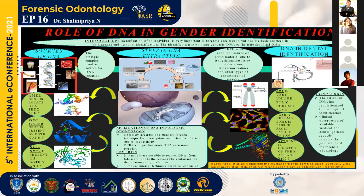Next is HLA DRB1. It belongs to the HLA class 2 beta chain, and it is present in both X and Y chromosomes.